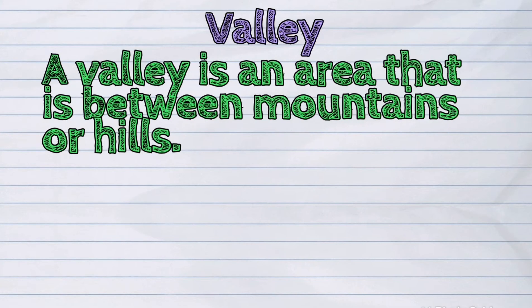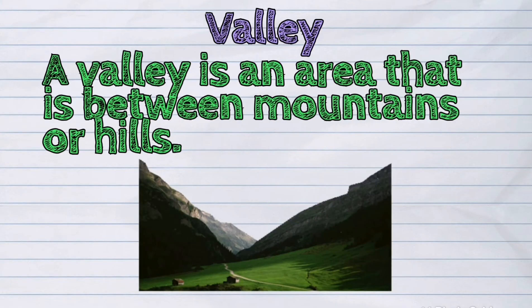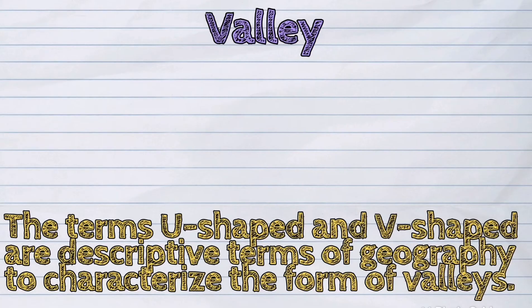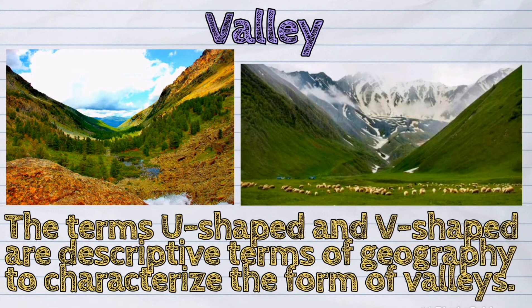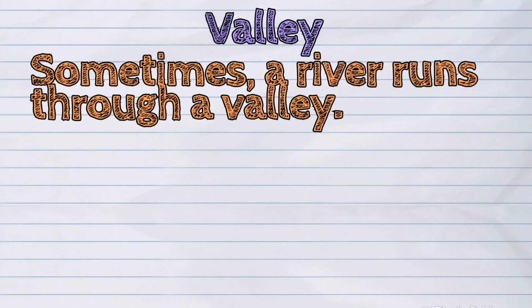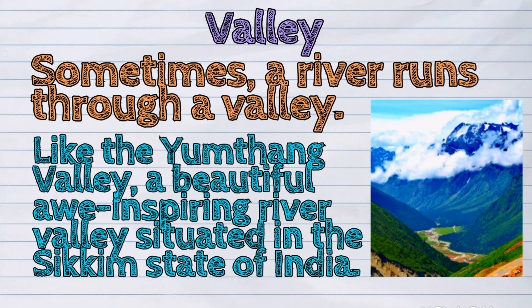Another type of landform is the valley. A valley is an area that is between mountains or hills. The terms U-shaped and V-shaped are descriptive terms of geography used to characterize the form of valleys. Sometimes a river runs through a valley, like the Yung Thang Valley, a beautiful awe-inspiring river valley situated in the Sikkim state of India.